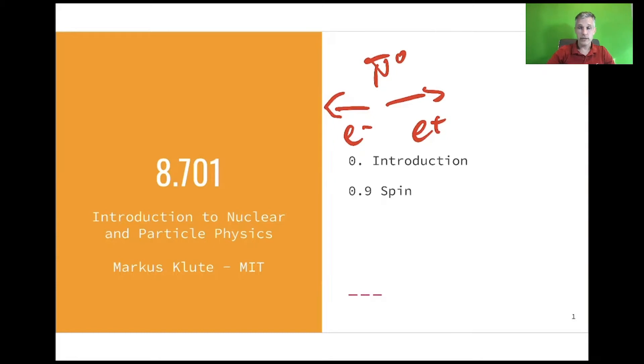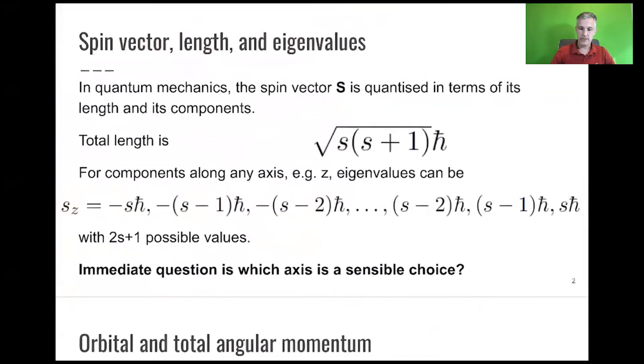I also told you that this decay is highly suppressed because of the spins of the particles involved. The pion has spin 0, and the electron and positron have spin 1/2, but it's not easily possible to align the electron and positron such that the spins align to 0. Therefore, this decay is not easily possible. Let's dive a little bit into this.